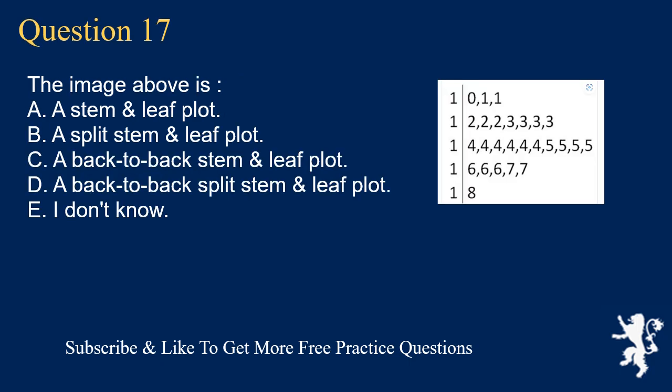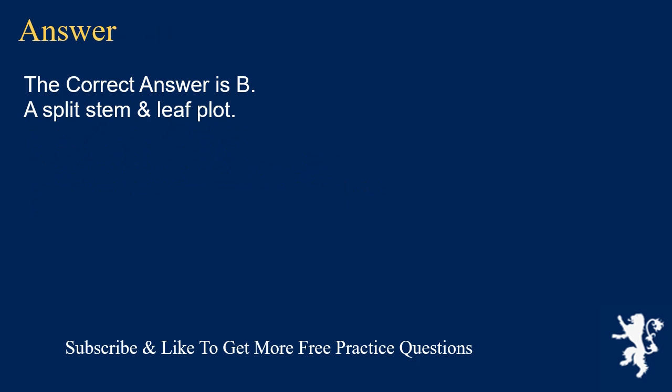Question 17: The image above is A. a stem and leaf plot, B. a split stem and leaf plot, C. a back-to-back stem and leaf plot, D. a back-to-back split stem and leaf plot, E. I don't know. The correct answer is B, a split stem and leaf plot.